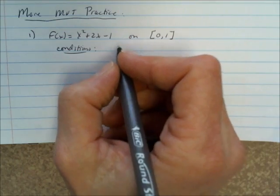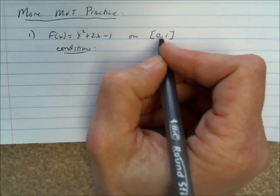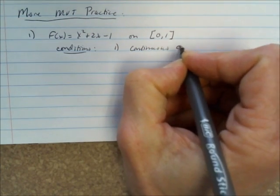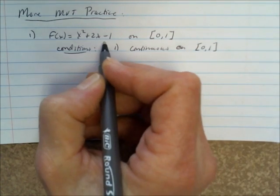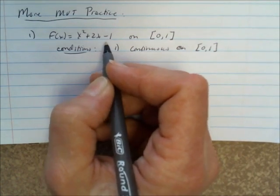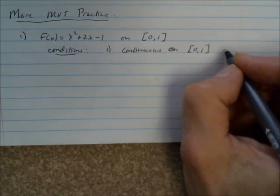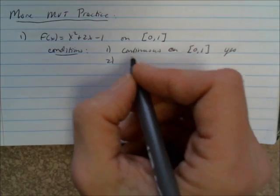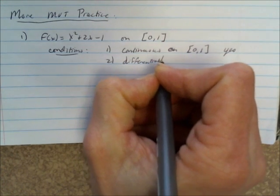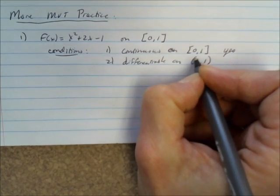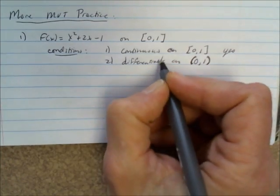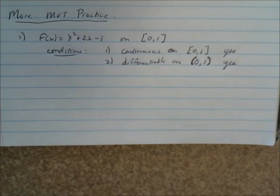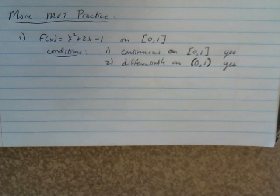First of all, is it continuous on the closed interval? In this case, this is just a quadratic, a polynomial. So yes, this is continuous. It doesn't have any breaks in it. The second condition: is it differentiable on the open interval? You're not including 0 or 1 when you're finding out if it's differentiable. Quadratics are differentiable everywhere, so that's really the only conditions that we need to satisfy before we start.